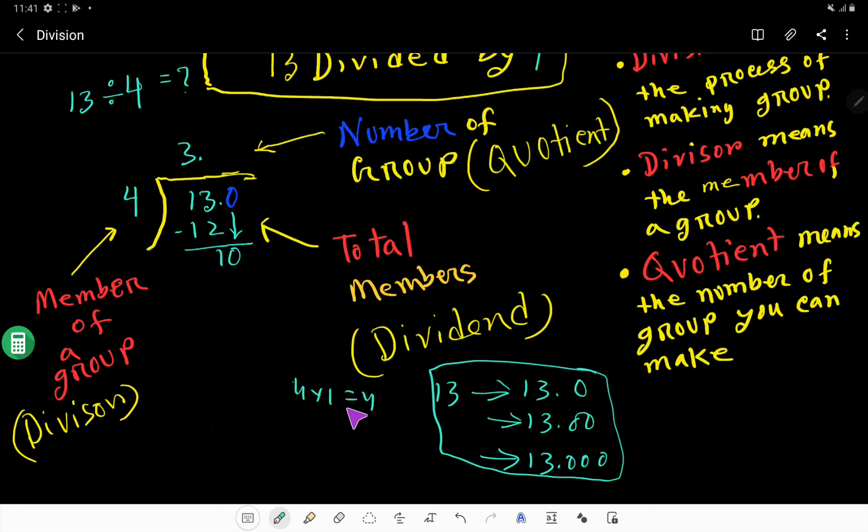4 goes into 10 how many times? 4 times 1 is 4, 4 times 2 is 8, and 4 times 3 equals 12. This 12 is greater than 10, so 4 goes into 10 two times. 2 times 4 is 8. If I subtract, 10 minus 8, I am getting 2.